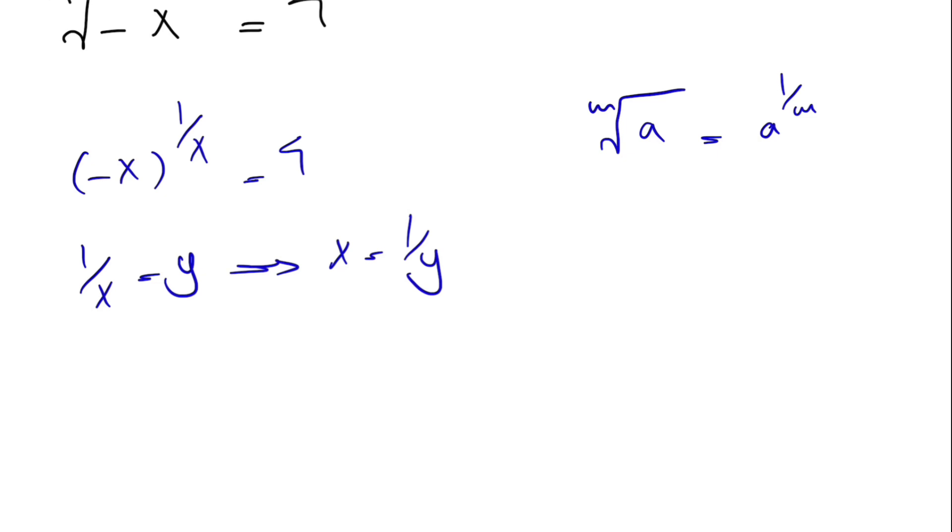Let's see how this is going to help us. From the first one, minus x will be minus 1 over y and 1 over x will be simply y and this will be equal to 4. When we have 1 over a, this will be equal to a to the power of minus 1.